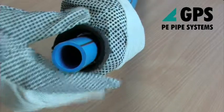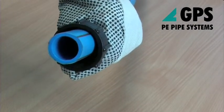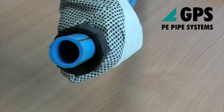Cut the pipe square. Unscrew the Protector Line fitting and remove the nut and white split ring.